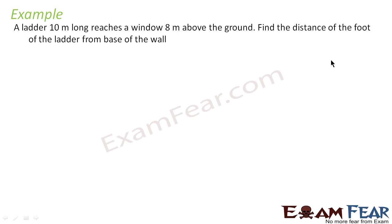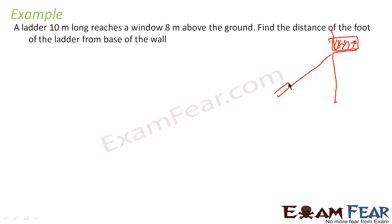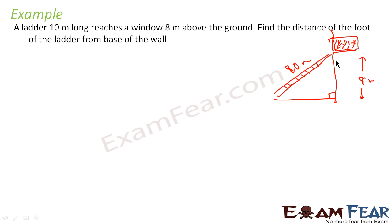The question says a window is 8 meters above the ground. There is a window in this building. There is a ladder — this ladder is 10 meters long — and the window is 8 meters above the ground.